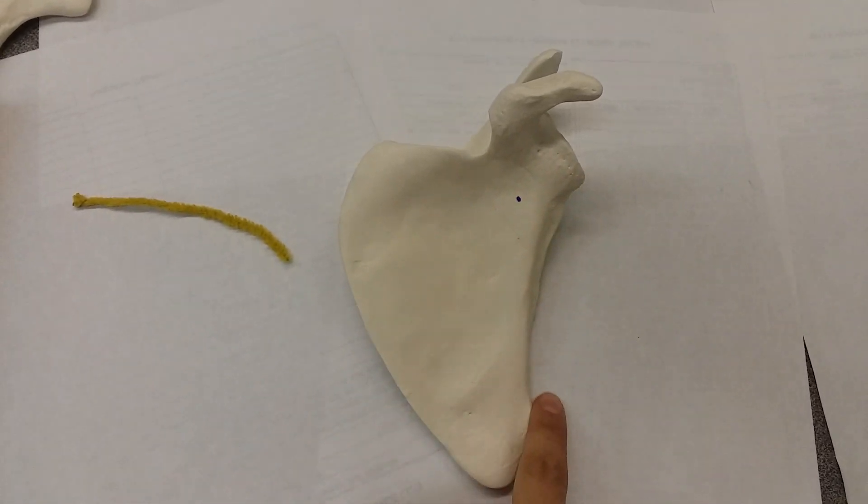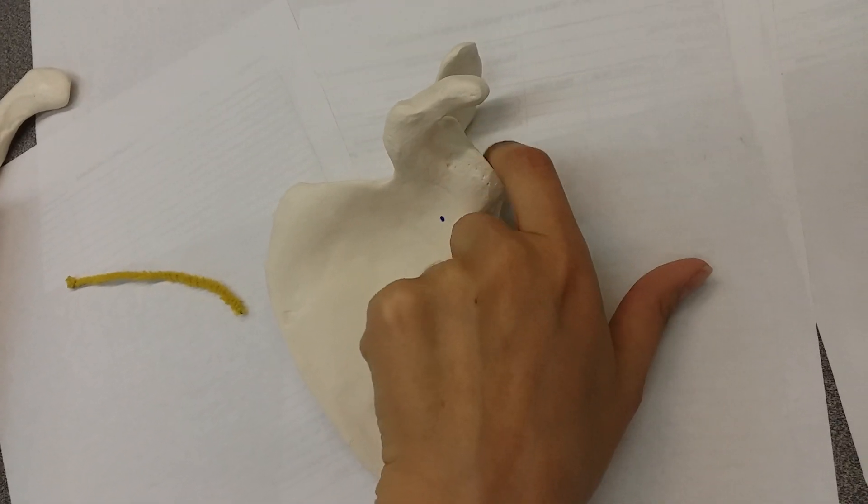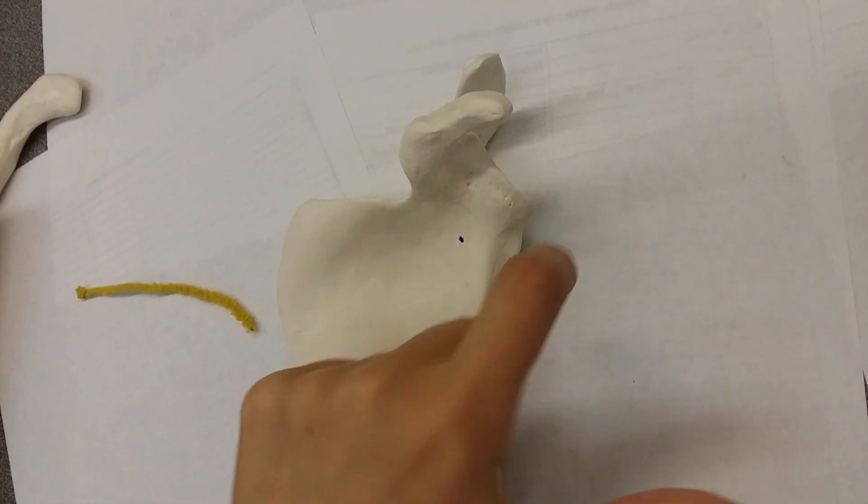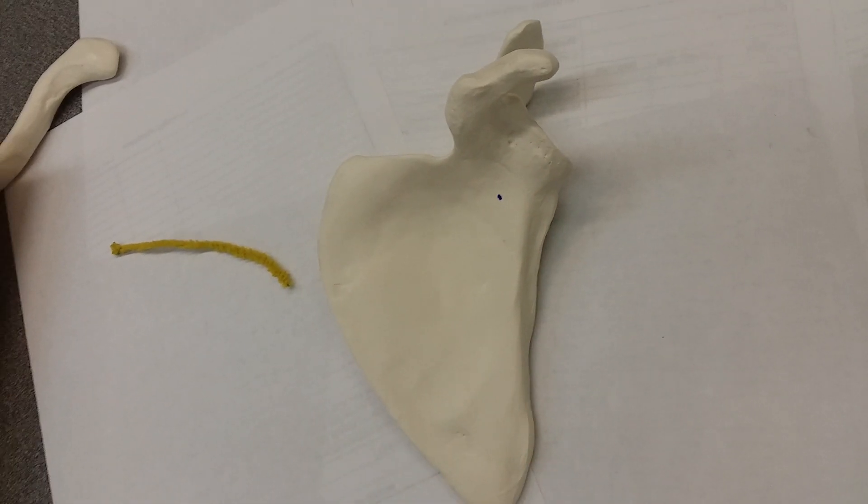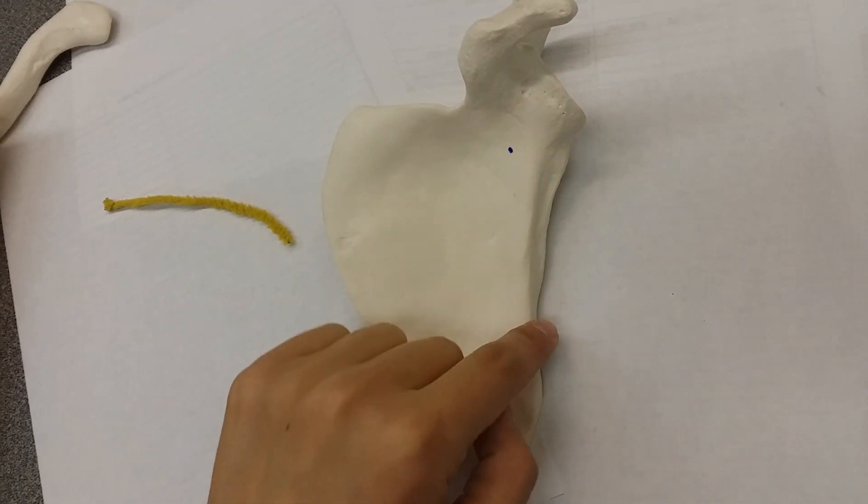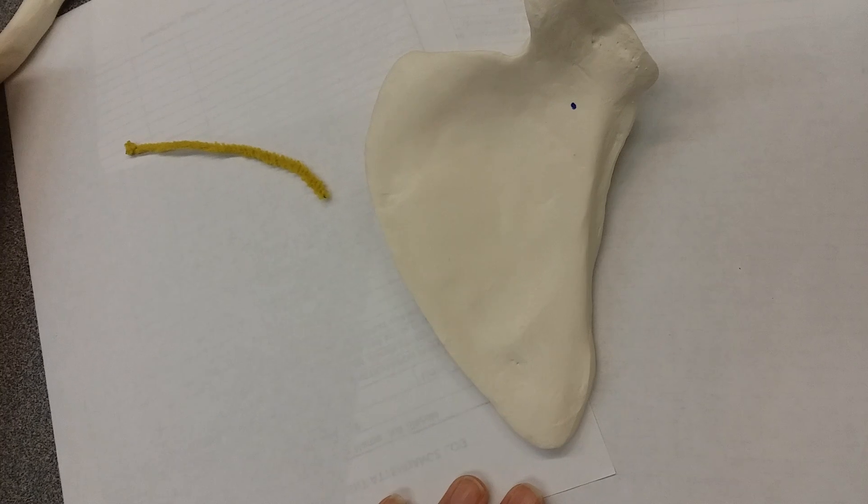Lateral border, medial border. The lateral border always has the glenoid cavity. People kind of joke it's the armpit, but it's where your humerus is going to articulate. The lateral, right, because your humerus is not the most lateral. So this is the lateral side—that's our lateral border, medial border, superior border.